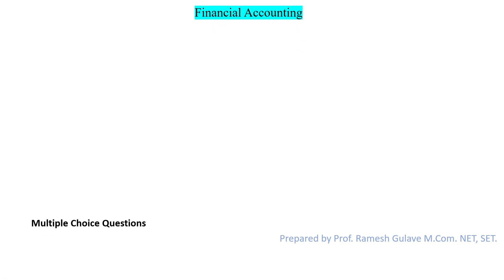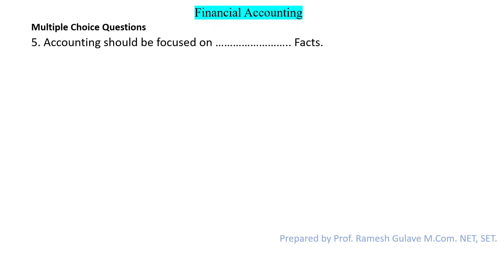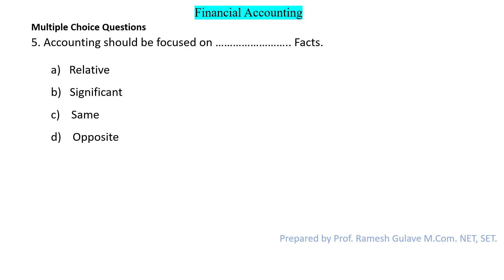The next question says: accounting should be focused on dash facts. The options are relative, significant, same, or opposite. Accounting should be focused on significant facts. As per the materiality concept, accounting should be focused on significant facts. So here option B is the right answer.